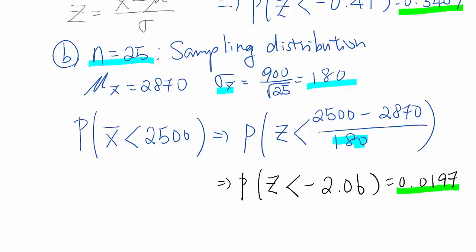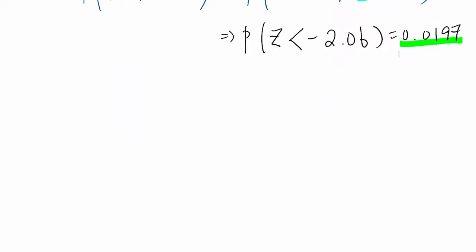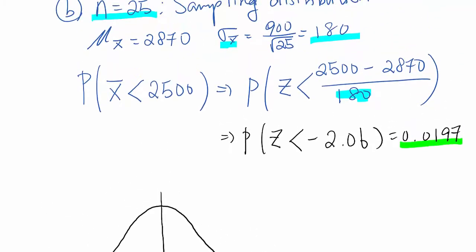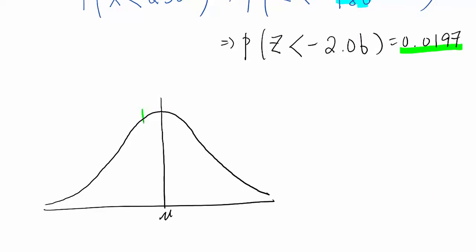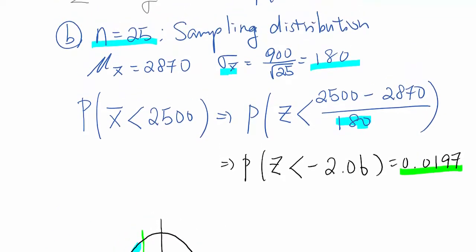So, I just drew some distribution graph so that you can understand a little better. So, before, the population data looks like this and this is our mean value here. And now, at this population case, our z-score was negative 0.41 which is around here. So, after finding area of this distribution area value, it becomes 0.3409.